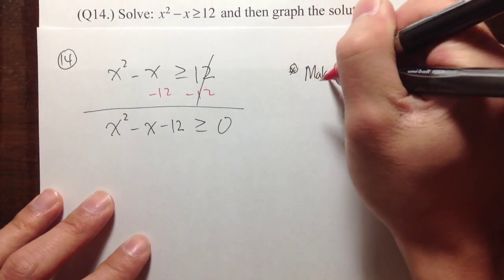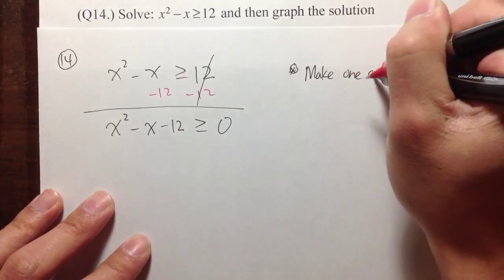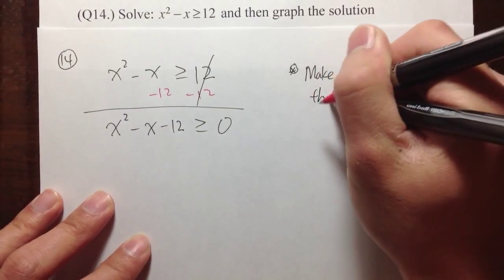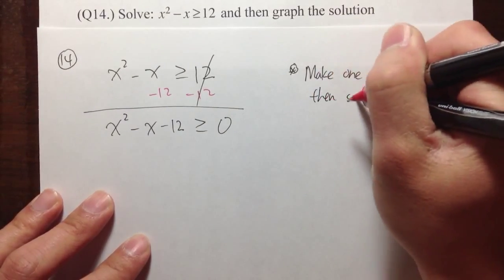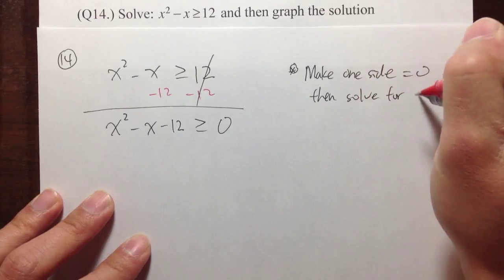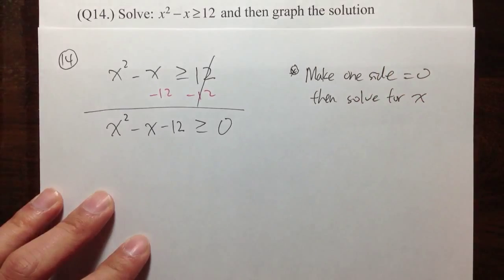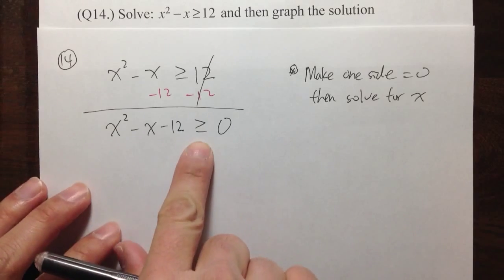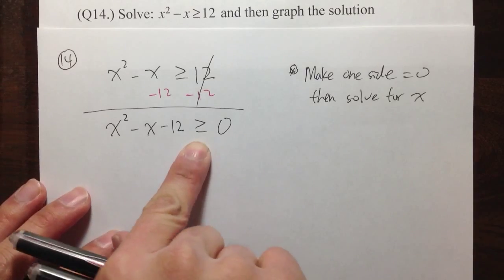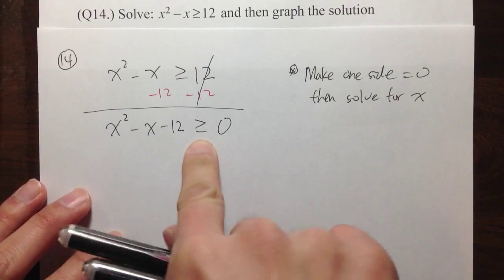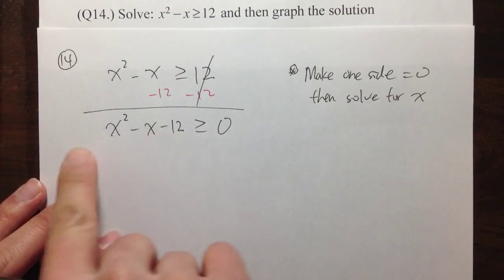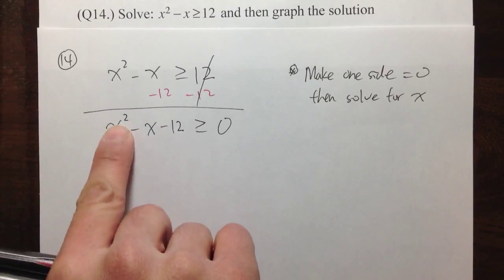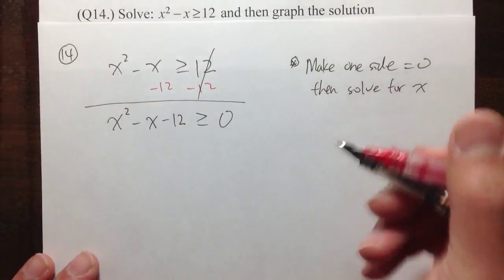First step: make one side equal to 0, then solve for x. Just solve for x as usual — pretend that this is an actual equation with an actual equal sign. Since this is x to the second power, we can just try to factor it first, and this one is actually factorable.